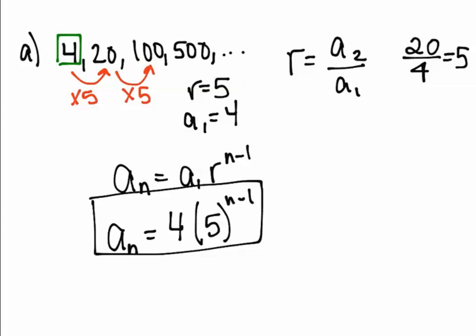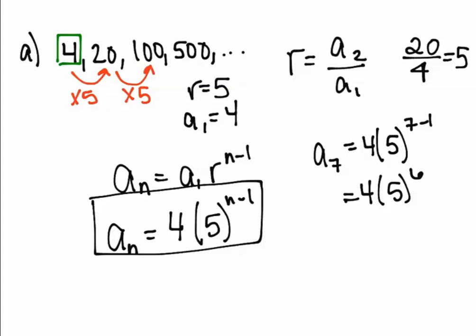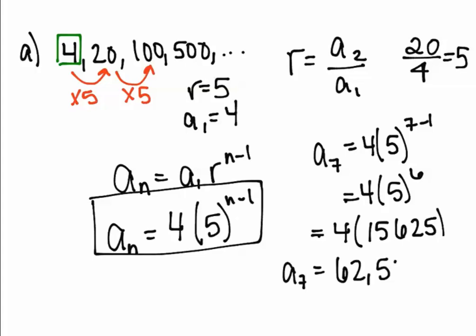The problem also asks us to find A7. To find A7, simply plug in 7 for n. That gives you 5 to the 6th power, multiplied by 4. Working through that step by step, A7 is going to equal 62,500.